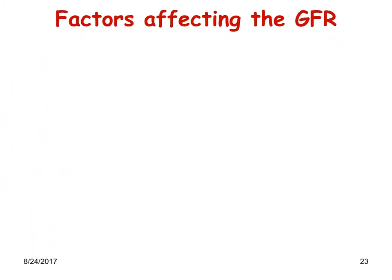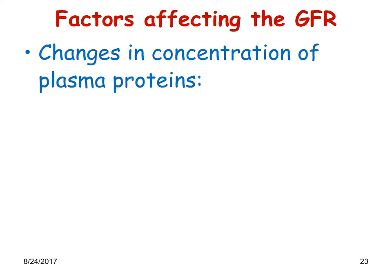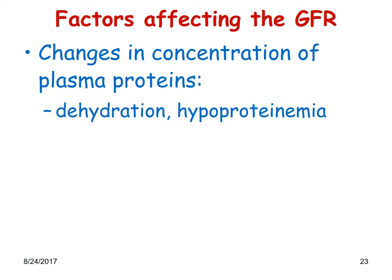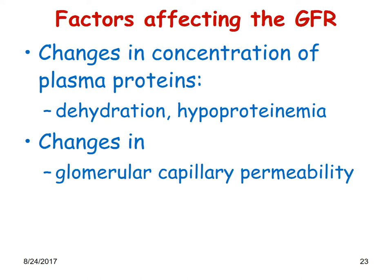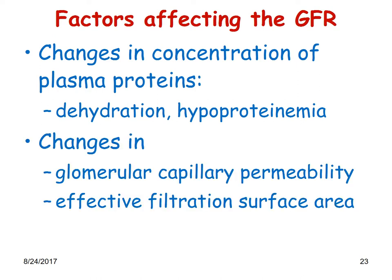Changes in the concentration of plasma proteins — which exert the colloid osmotic pressure — also affect filtration. For example, dehydration and hypoproteinemia are going to affect the filtration rate. Also, changes in glomerular capillary permeability and effective filtration surface area — if it gets thickened — will alter the GFR.